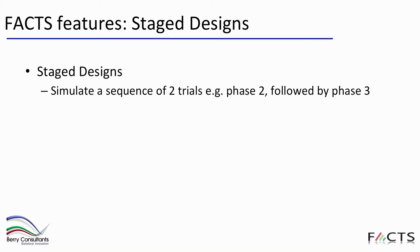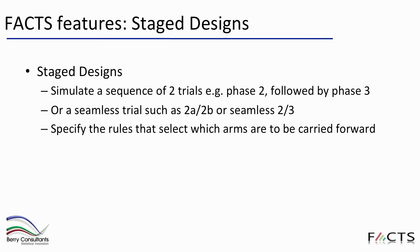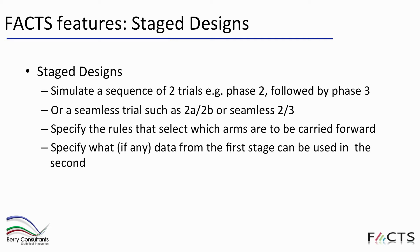The stage design simulation allows us to simulate a sequence of two trials, such as a phase two followed by a phase three, but it can also simulate a seamless trial such as a seamless phase two/three or even a seamless two-a/two-b trial — a proof of concept followed by a more detailed dose-finding stage. There are rules for specifying which arms from the first stage are carried forward, how much data from the first stage can be used in the second stage, and the ability to use a completely different analysis in the second stage, such as PFS versus overall survival, or efficacy versus safety.